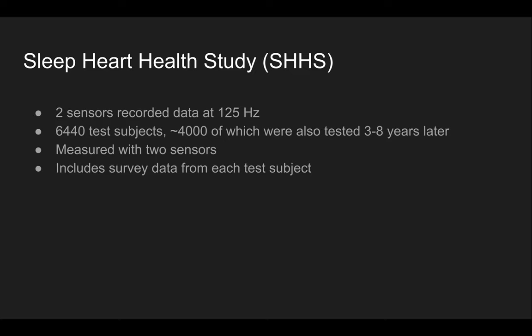The SHHS dataset has two sensors, each sampling values at 125 hertz, meaning 125 values are sampled every second. There are around 6,000 test subjects, 4,000 of which were tested again three to eight years later. This dataset has two cohorts, two recording cohorts. There were two EEG sensors outputting two EEG values for any given recording, and interestingly this dataset also includes survey data answered by the patient and the human recorder for the sleep stages.